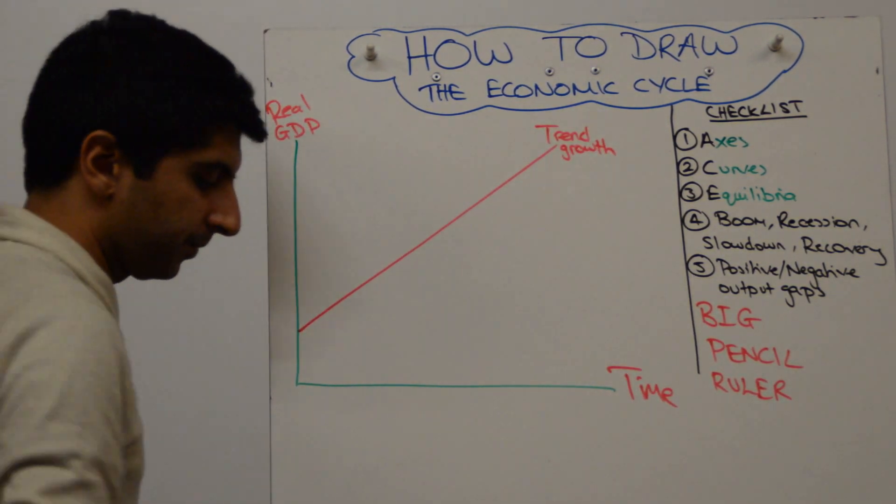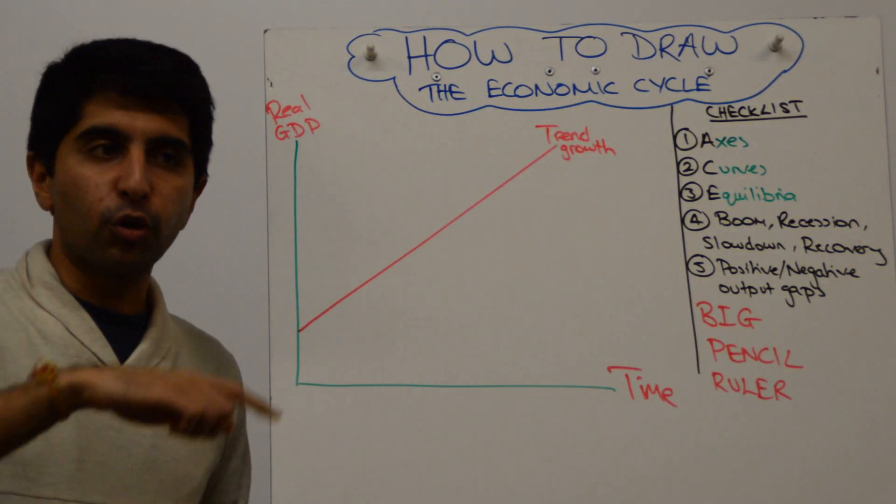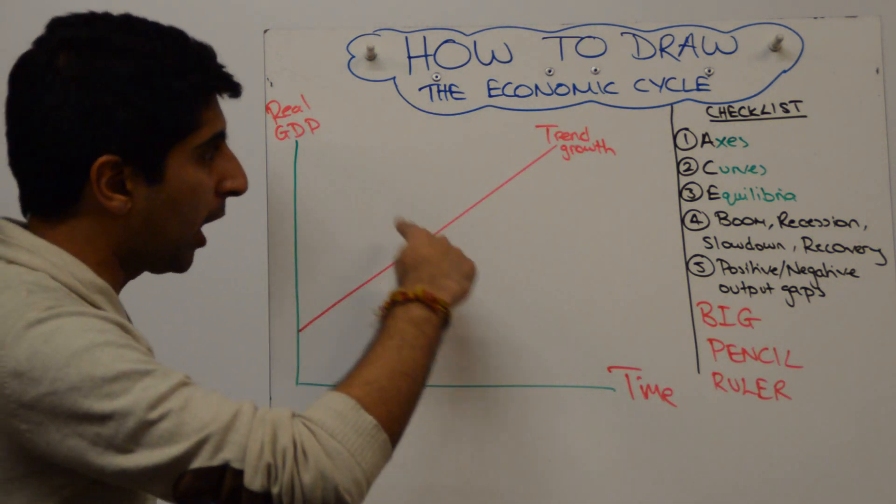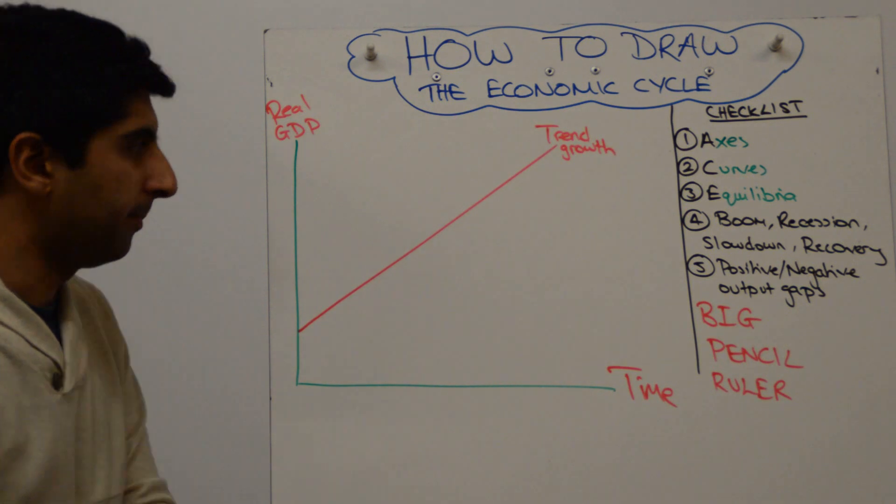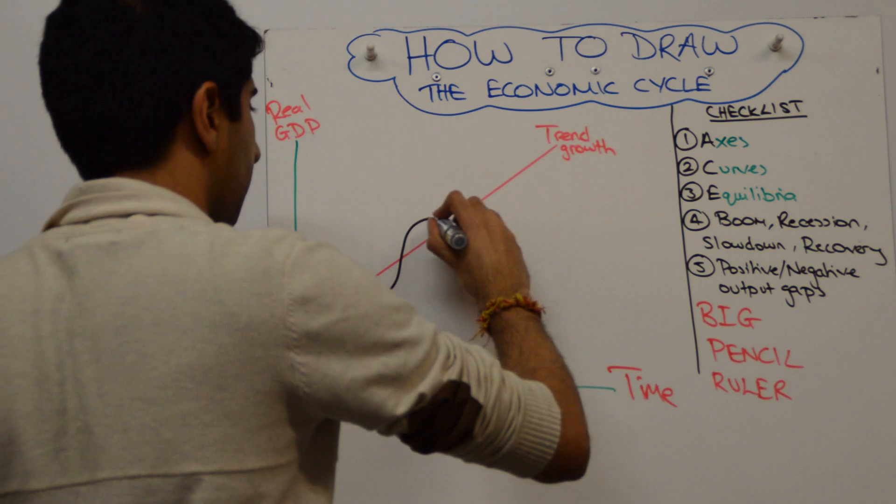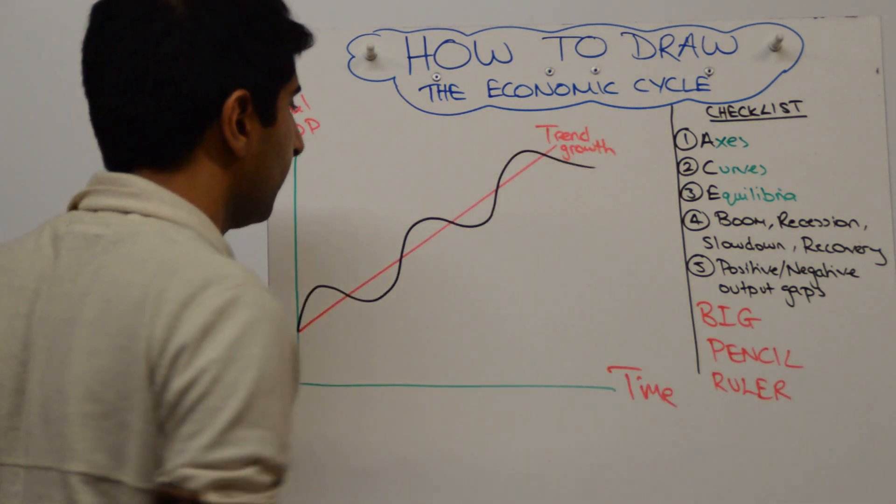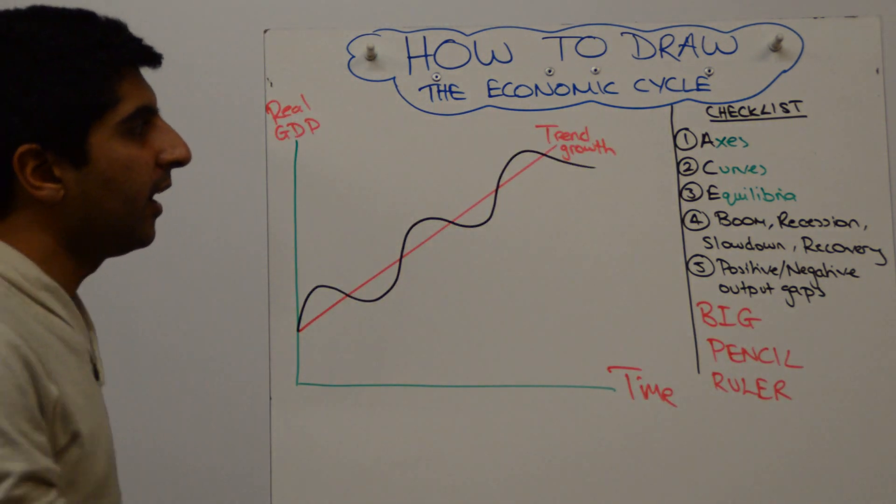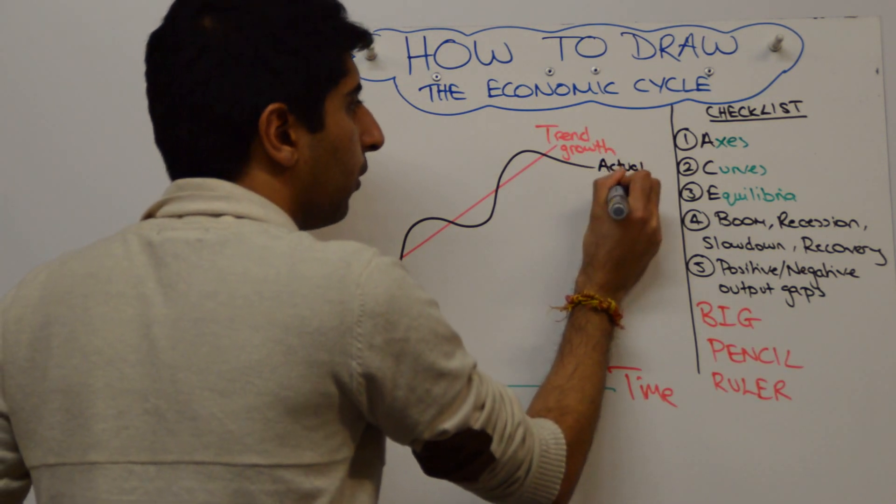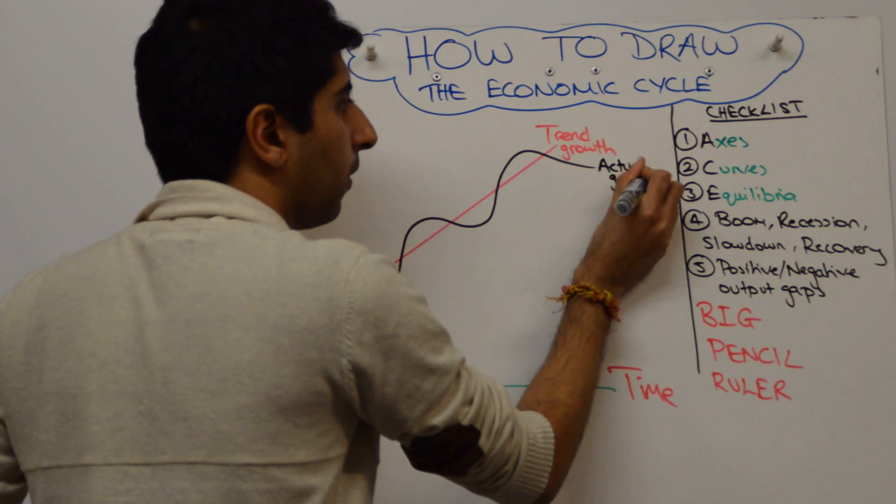The next thing to do, I'll do it in black, is to draw your actual growth which is your wavy line, fluctuating line, going above and below your trend rate of growth over time. So it's much easier to draw this once you've already drawn your trend. Something like that would do beautifully. And we can call that and label it actual growth.